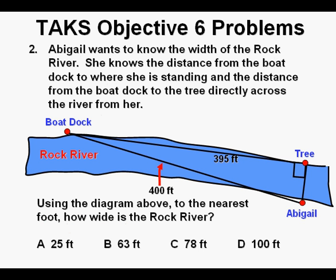Problem 2. Abigail wants to know the width of the rock river. She knows the distance from the boat dock to where she is standing, and the distance from the boat dock to the tree directly across the river from her. Using the diagram above, to the nearest foot, how wide is the rock river?